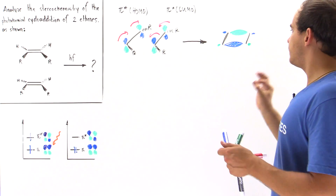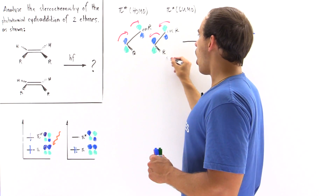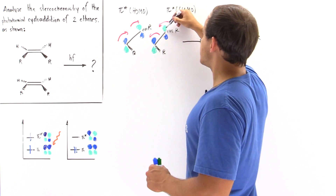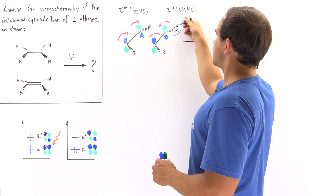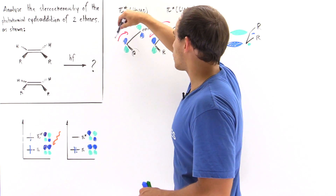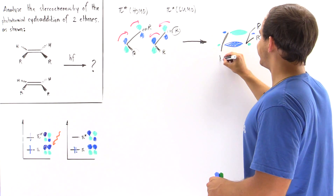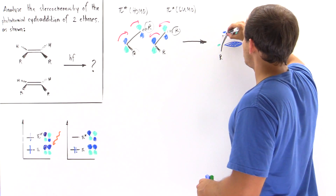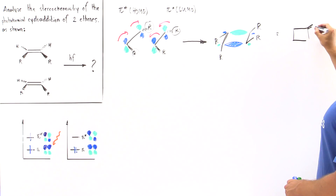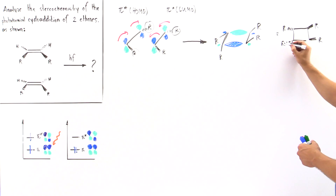Now let's examine individually where the R groups will point. If this rotates 90 degrees this way, the R group pointing out of the board will shift upward. Similarly, this R group pointing this way will also point up after that rotation — so these two R groups both point up. The other R group, because it rotates this way, will rotate downward, and the same is true for the fourth R group — it also points downward. So looking at the molecule top to bottom, two R groups point up and two point down.